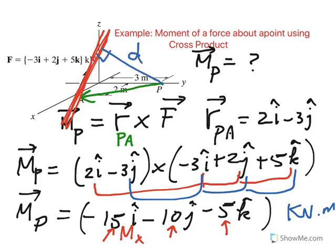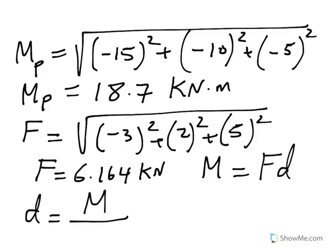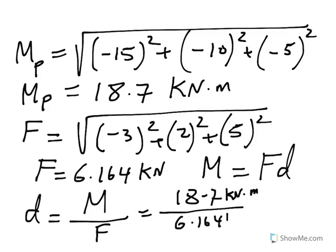So let's say if I want to find that distance D, how do I find it? That should be very easy because moment is defined as F times D. Therefore, if you want D, all you have to do is take the moment and divide it by F. So our moment is 18.7 kilonewton meters, and the magnitude of the force is 6.164 kilonewtons.